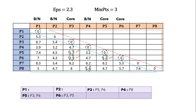Point p7 has only one distance less than epsilon — from p7 to itself — so it is a border or noise point. Point p8 has distances from p8 to p4 and from p8 to itself less than epsilon, so it is also a border or noise point. In summary, the 3 core points are p3, p5, and p6. Now we need to determine which of the remaining points are border points and which are noise points.